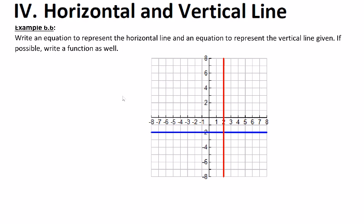When you look at these two lines we're being asked to do a couple of things. Example 6.6: write an equation to represent the horizontal line and an equation to represent the vertical line. So we're going to write two equations, one for the horizontal line, a second for the vertical line. If possible write a function as well.